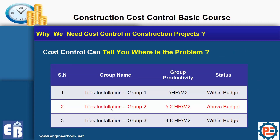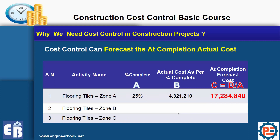Cost control can also tell you where the problem is. Let's say you have three groups working on tile installation and you have a productivity problem. Which group is doing well and which is doing poorly? You can find this from cost control reports. As shown here, group number two has the worst productivity rate and group number three has the best. You can also forecast the at-completion actual cost using cost control reports.